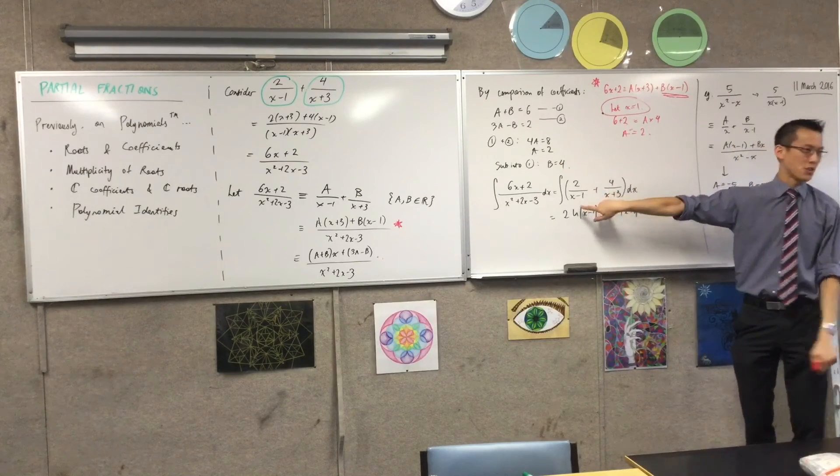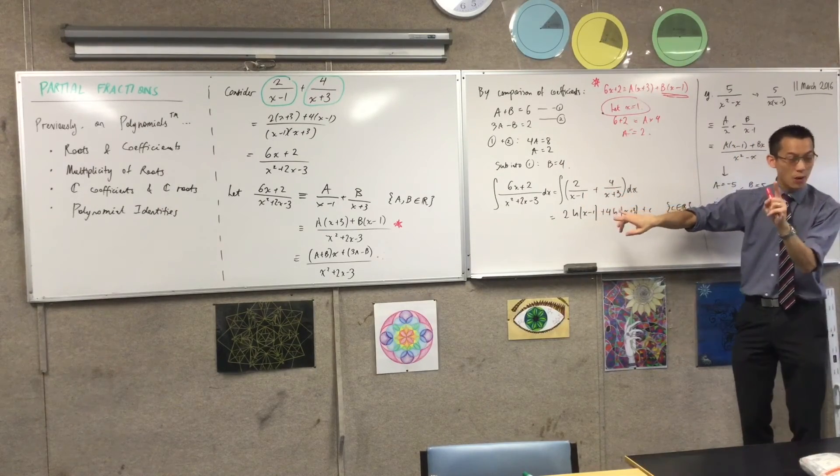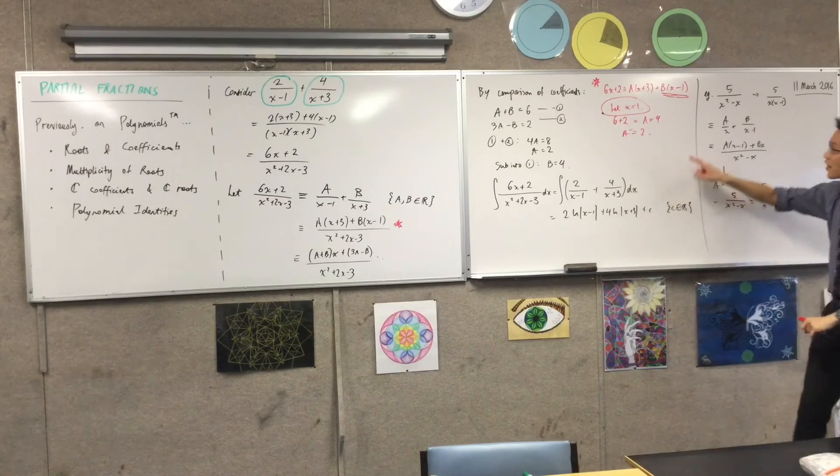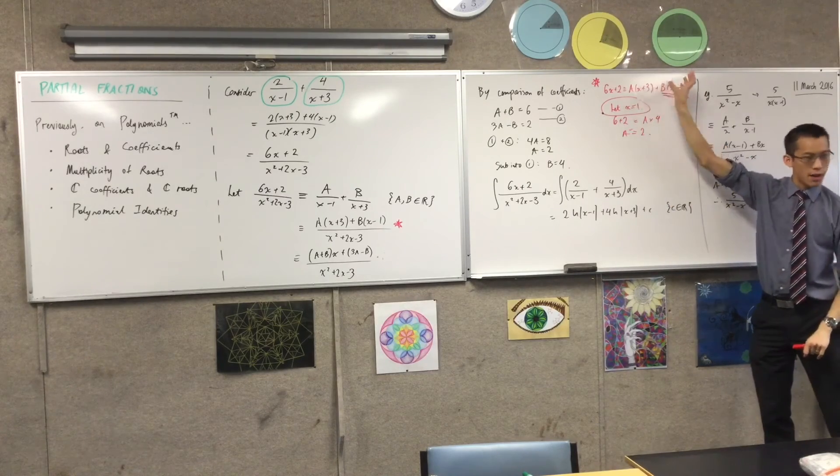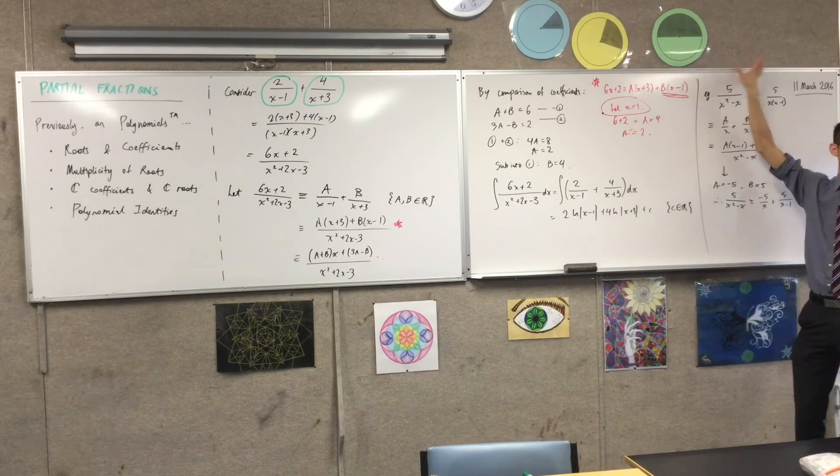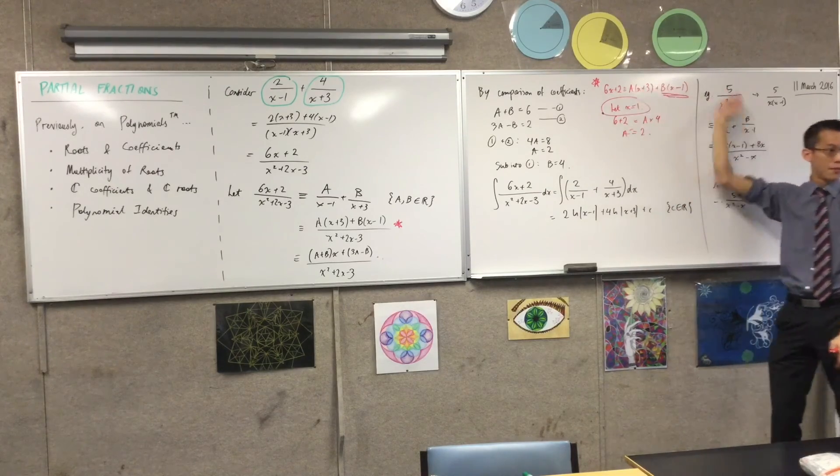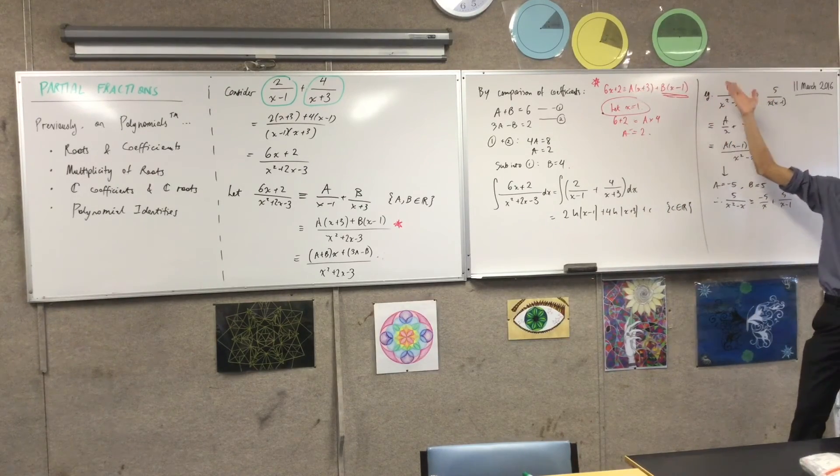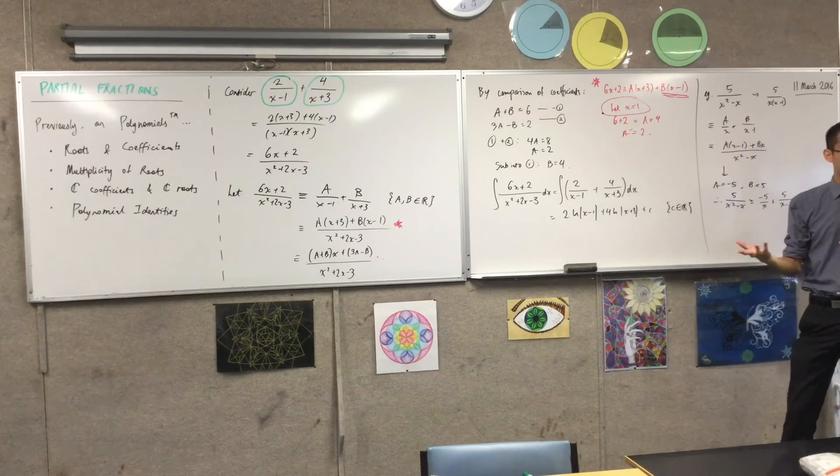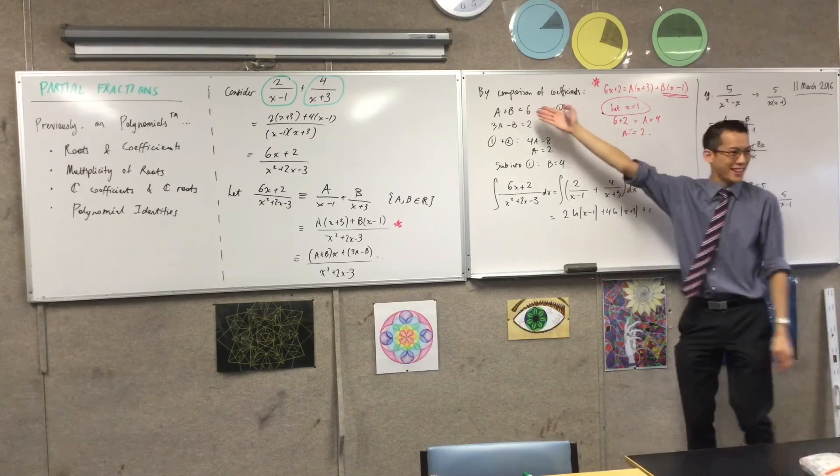you're going to have an A term, a B term, and then there's a C term, and there's no one number you can put in there that gets rid of two of the constants, right? You'll always end up with two of them left over. And so you end up back in this situation, right? Do you see what I mean?